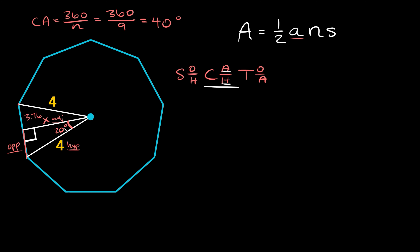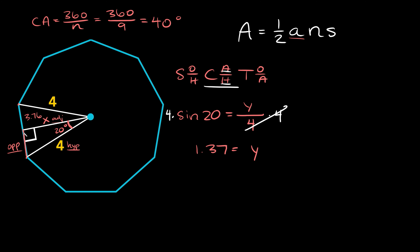We take the sine of 20 degrees equal to the opposite side over the hypotenuse: sin(20°) = y/4. Multiplying both sides by 4, y equals 4 times sine of 20, which is approximately 1.37. But that's only half the full side length, so we multiply by 2: 1.37 times 2 equals 2.74. That's the full side length.